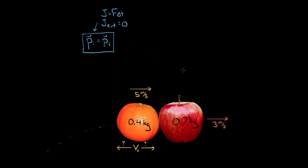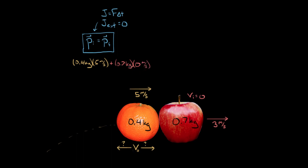So what does this look like? Momentum is mass times velocity. The initial momentum of the orange is 0.4 kg times five meters per second. Plus the mass of the apple, 0.7 kg, multiplied by its initial velocity — which was zero, because the apple was hanging on the tree branch and just sitting there. So that entire term is zero and goes away.